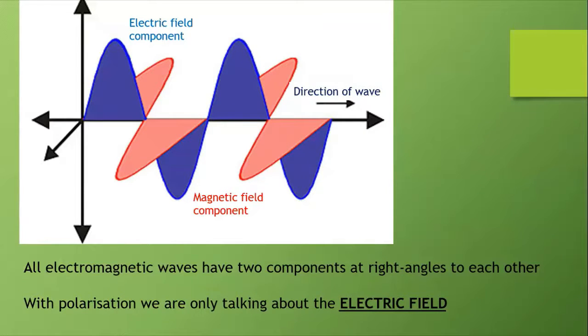Electromagnetic waves have two components at right angles to each other: an electric field component and a magnetic field component. With polarization we're only talking about the electric field, the change in the electric field. Let's forget about the magnetic field component for the moment.